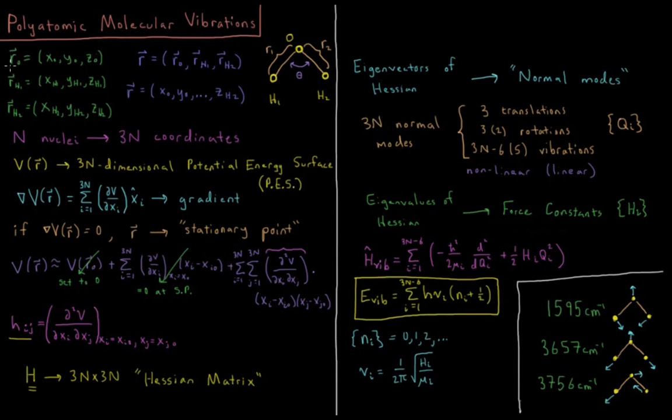So we have our position variables, which we can imagine a vector for each individual atom. This is a water molecule here. I've got two bond lengths, R1 and R2, and a bond angle theta. So the Cartesian positions of the oxygen, XO, YO, ZO, are in the vector RO.